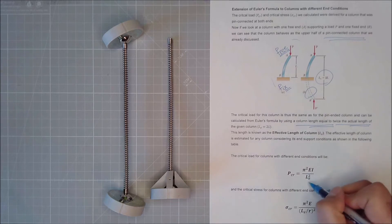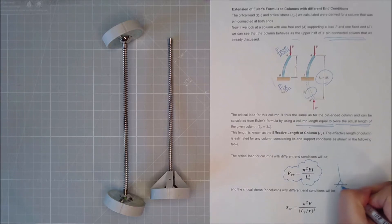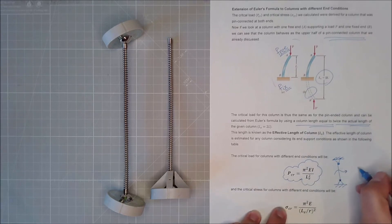So if this was my formula generally for let's say the pin ended column, in case suddenly this changes to a free end with a fixed end on the other side, fix, free, pin, pin.